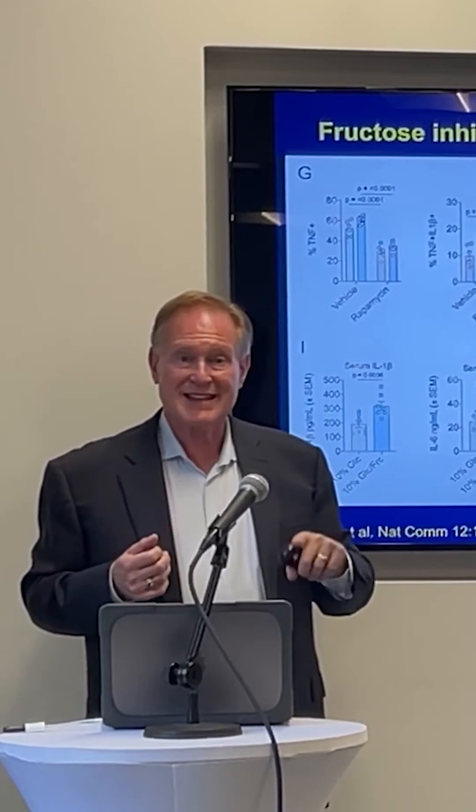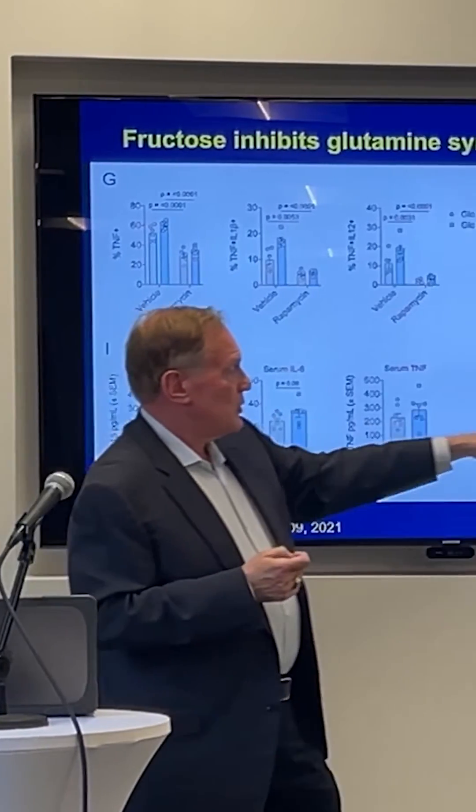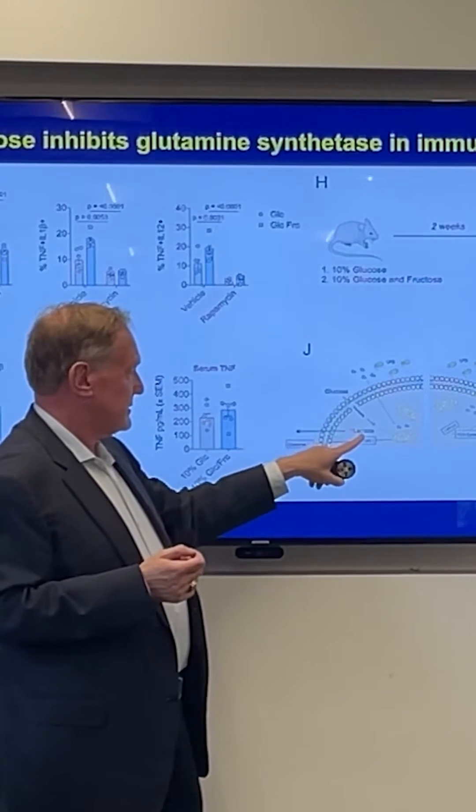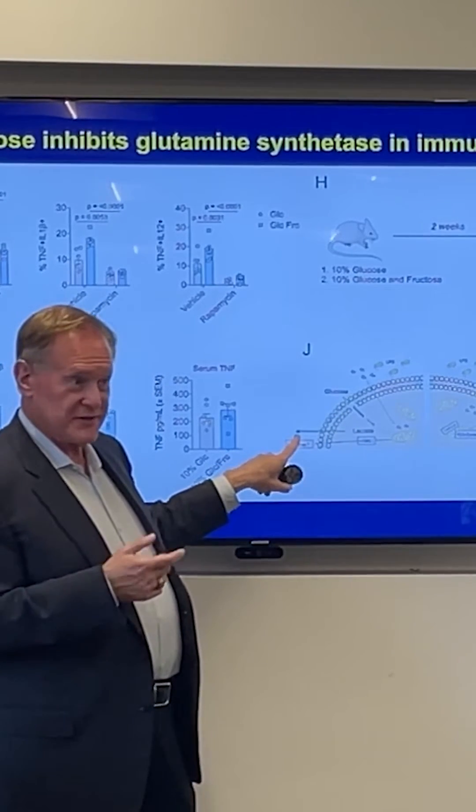Fructose is inhibiting that. And when you put glucose into immune cells, you get lactate. Lactate's okay. Here, this is L-lactate.